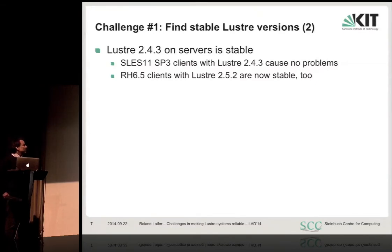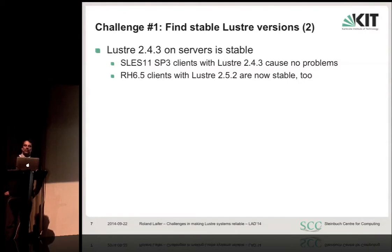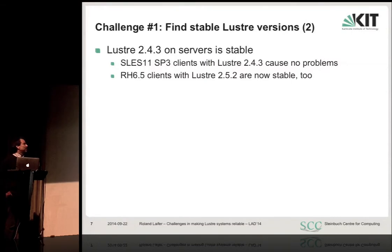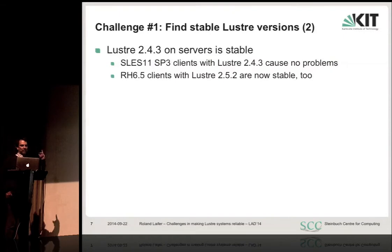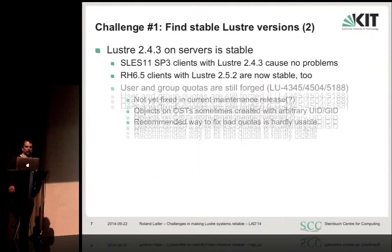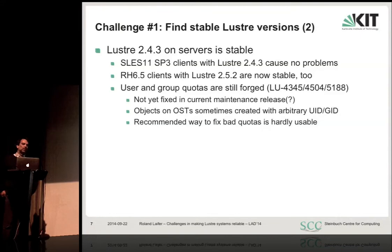We migrated all servers to 2.4.3, and the SLES11 SP3 clients are running with Lustre 2.4.3 with no problems. This is not officially supported, but there was a historical reason — we also had to mount an old system using 2.1 servers, so 2.5 was not an option. Since it turned out to be running stable, we left it. The Red Hat 5 cluster was upgraded to 2.5.2, which is now also stable. The main remaining problem is quota issues — quotas are still broken.